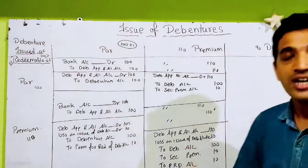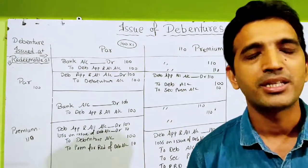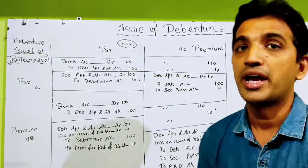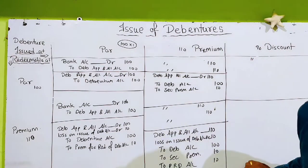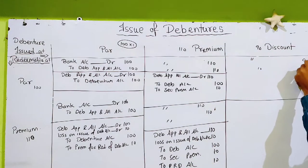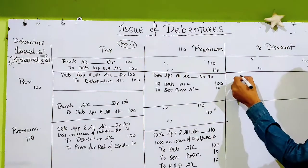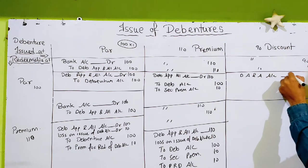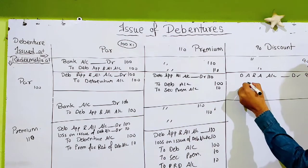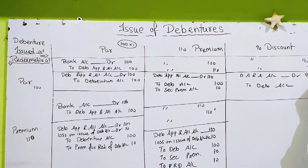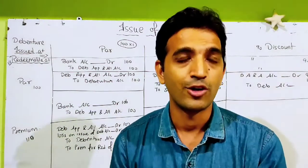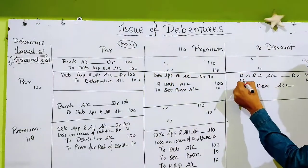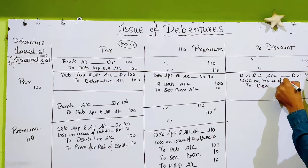Debenture issued at discount, redeemable at par. Entry 1: Bank Account debit 90, to Debenture Application and Allotment Account 90. Entry 2: Debenture Application and Allotment Account debit 90, to Debenture Account 100 — but we only received 90 and need to transfer 100, so the difference goes to Discount on Issue of Debenture Account.